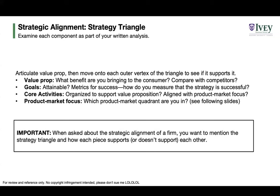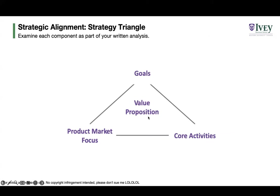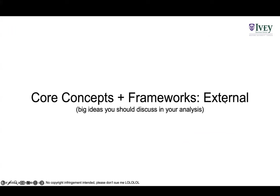Product-market focus compares markets and products. There are four main strategies based on whether the product or market is new: a new product in an existing market is product expansion (e.g., adding a new cereal brand); an existing product in an existing market is market penetration to increase market share; a new product in a new market is diversification; and an existing product to a new market is market expansion — like bringing Apple devices to China in the early 2010s.